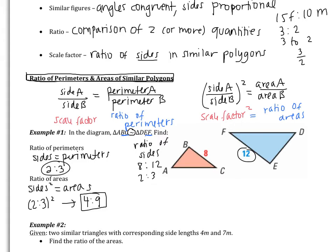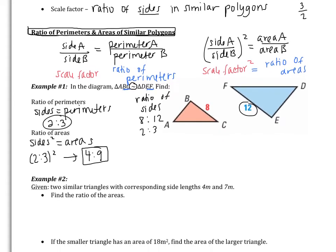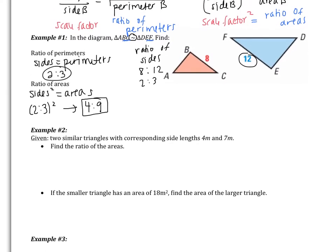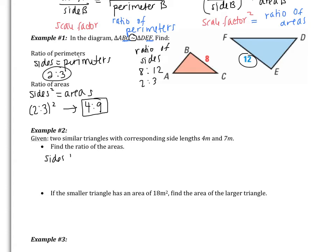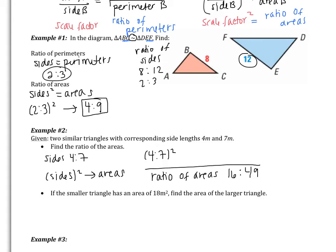Now let's look at example 2. You are given two similar triangles with corresponding side lengths of 4 and 7. Find the ratio of the areas. We know the sides are 4 to 7. Squaring both gives the ratio of the areas: 4 squared is 16, 7 squared is 49. So the ratio of the areas is 16 to 49.